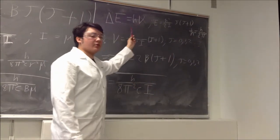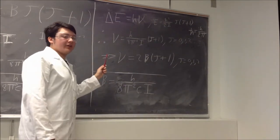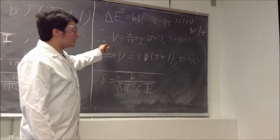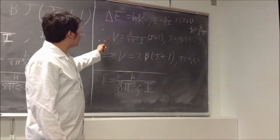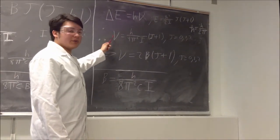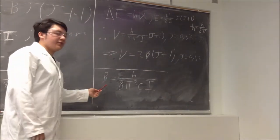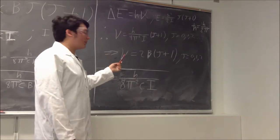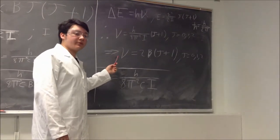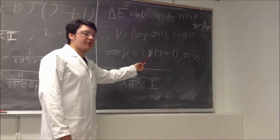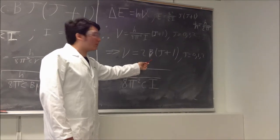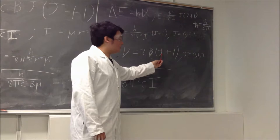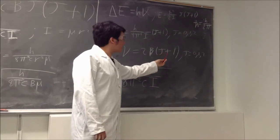With the combination of these two equations, we can isolate the frequency into this form. We may reconfigure this form using the rotational constant equation which we talked about previously. Substituting that in, we receive this equation for the frequency which equals 2 times the rotational constant multiplied by J plus 1.